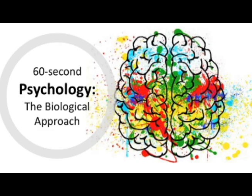The key theories of the biological approach include neuroanatomy, which is the structure of the brain and nervous system; neurochemistry, which are chemicals that influence behaviour such as hormones; and genetics, which is the idea that our genetic makeup influences the way we behave. This also links to evolution through the way that these genes have been naturally selected and passed through generations.